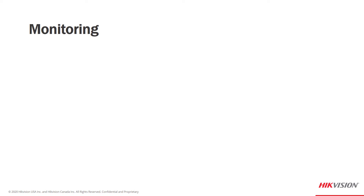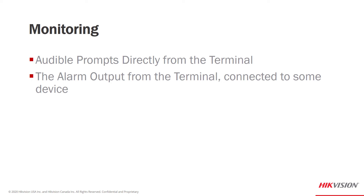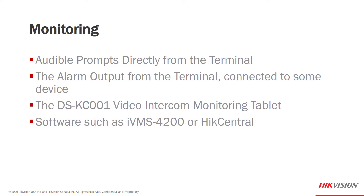How are we going to monitor the different events that take place with our temperature screening terminal? It really depends on your application. Perhaps the person doing the monitoring — a security guard or receptionist — is in close proximity and can simply hear the audio prompts. Another option is to use the alarm output from the terminal connected to some device, like a flashing light. A third option is the DS-KC001 Video Intercom Monitoring Tablet, designed to work directly with the temperature screening terminal. And finally, software such as IVMS 4200 or Hike Central can provide a higher level of monitoring, allowing for manual door control, different types of alarms, review of events, emails, and much more.